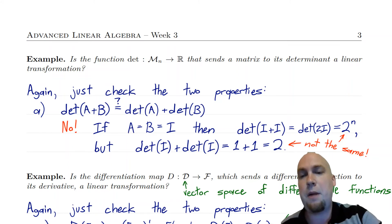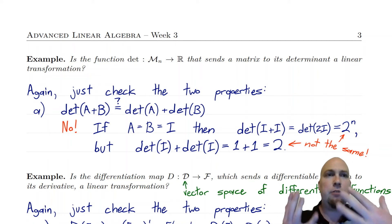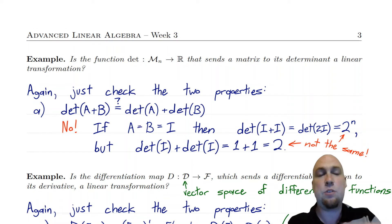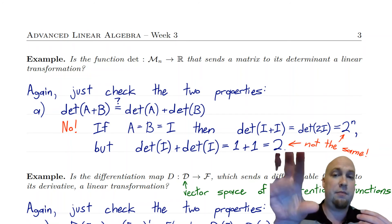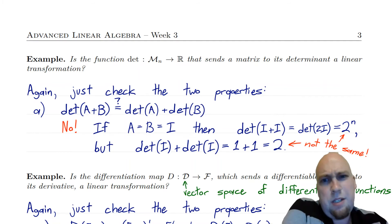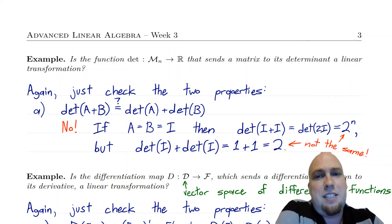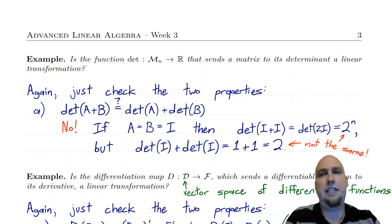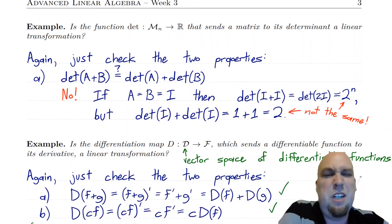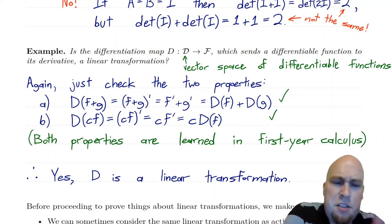A couple of quick notes: we only checked property A, and that's because we already showed it doesn't hold — as long as at least one of the two properties fails, it's not a linear transformation, so you don't need to check the other. Also, when n equals 1, the two values (2 and 2 to the power n) are the same, so the determinant on 1 by 1 matrices is actually the identity function and technically a linear transformation — but we don't usually consider 1 by 1 matrices, we just call them scalars. So the determinant is not a linear transformation.